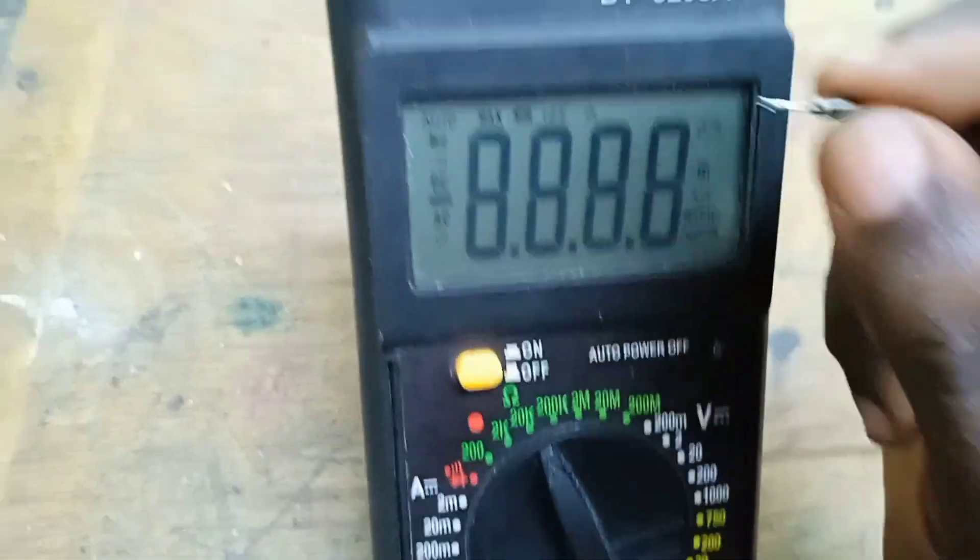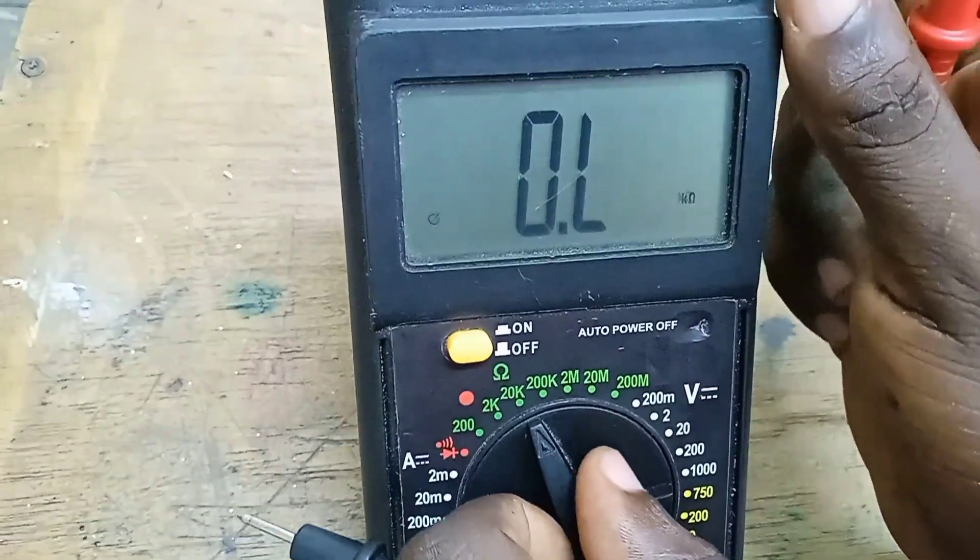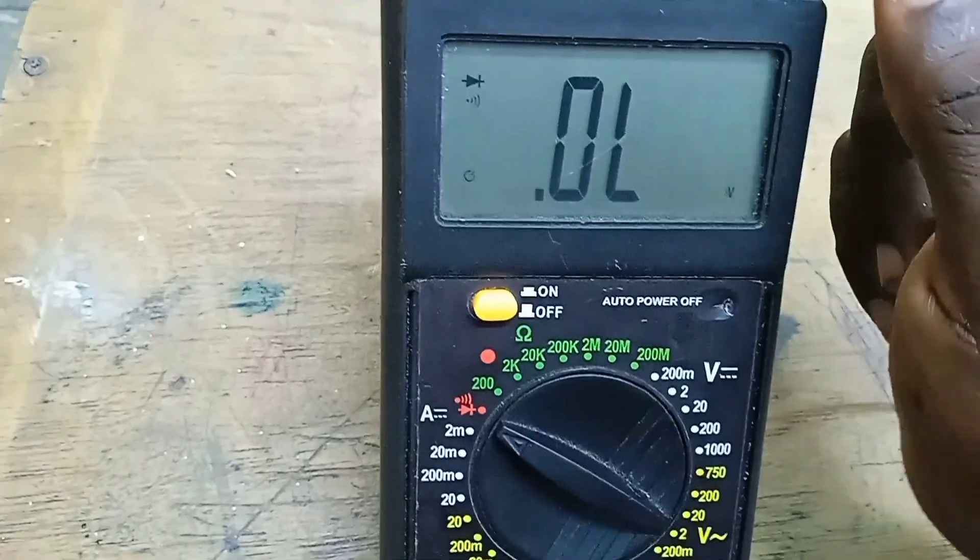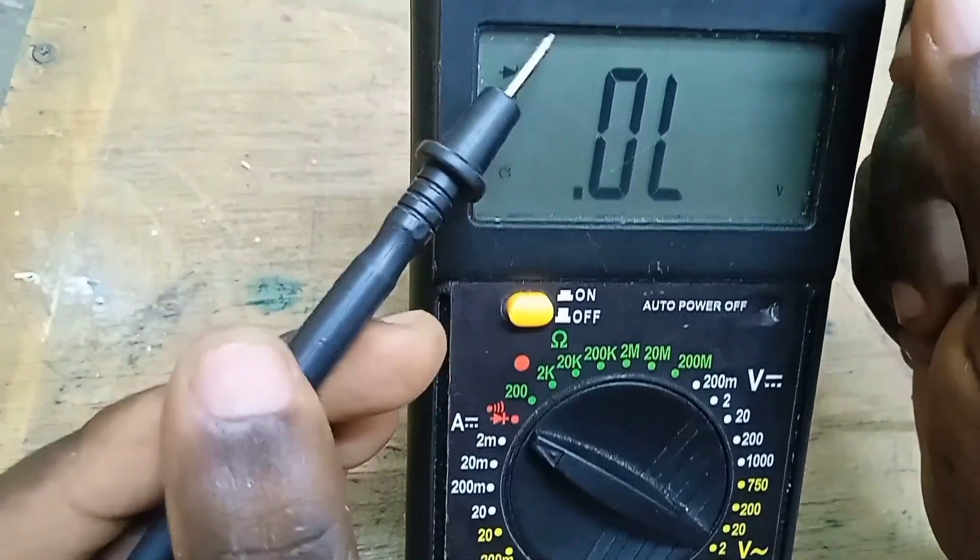Switch on the multimeter. After switching it on, switch your multimeter to the diode mode, and you will be able to see a diode symbol here.